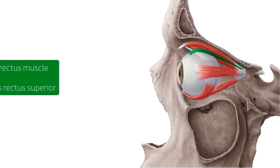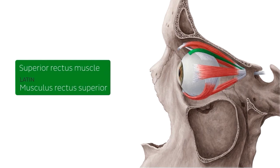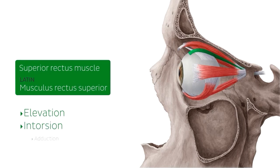The superior rectus muscle is one of the six extraocular muscles of the eye for controlling eye movement. The superior rectus muscle produces the following actions: elevation, intorsion, and adduction of the eye. During adduction of the eye, the superior rectus produces adduction.